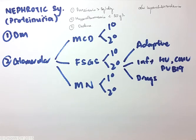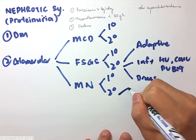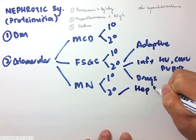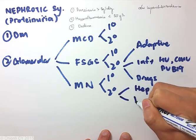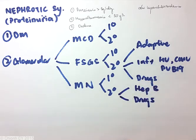In membranous nephropathy, secondary causes include hepatitis B infection, drugs. Typical drugs would be the DMARDs such as gold and penicillamine, although a whole long list of drugs has been implicated in membranous nephropathy.